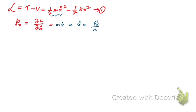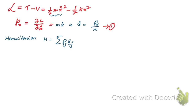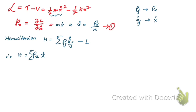Now the Hamiltonian is given by H equals the summation of pj times q-dot j minus L. In this system, pj is nothing but the momentum px and q-dot j is x-dot. Since this is a single body oscillator, we don't need a summation, so H equals px times x-dot minus L.